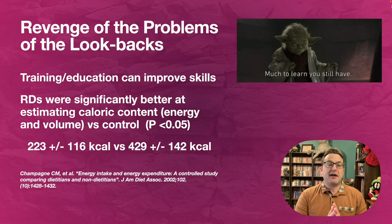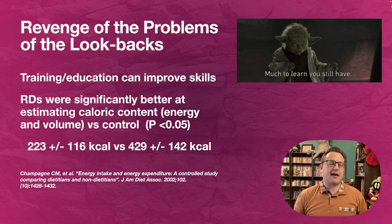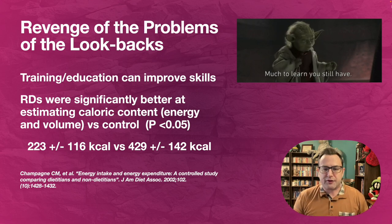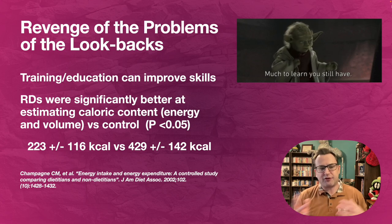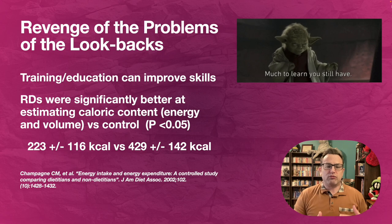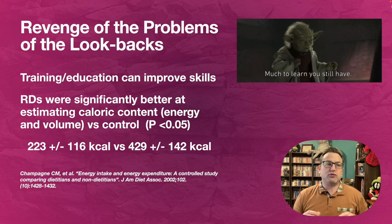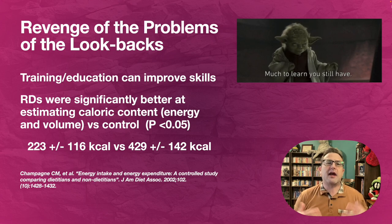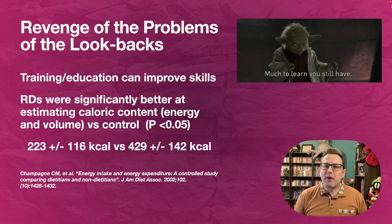Here's a little ray of sunshine: training and education can improve those estimation skills. Dietitians were significantly better at estimating caloric content — energy and volume — versus a control. The average person was off by over 400 calories, generally overestimating by about 150 calories plus or minus. Dietitians were half that. So it's nice to know that the time you spent in school has demonstrably proven to be beneficial. You can look at a plate of food, do some quick back-of-the-envelope math, and come up with a pretty accurate assessment of how much is on that plate.